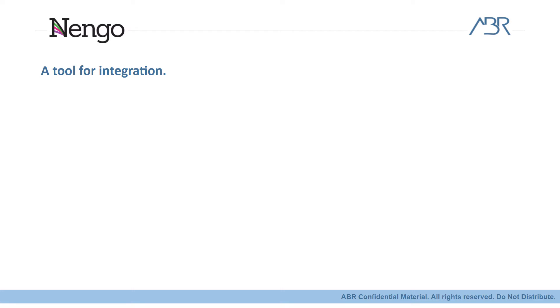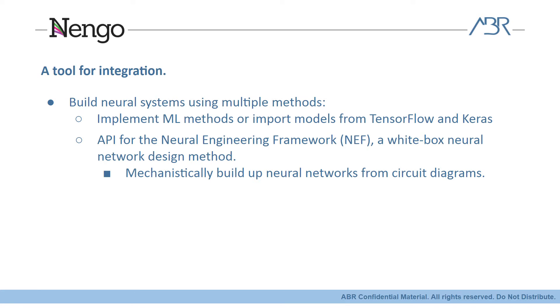Where Nengo really shines is as a tool for integration. When I'm in my neurorobotics development workflow, I need to be able to easily integrate a whole bunch of different kinds of things, like optimization methods, runtime dynamics, and backend hardware. On the perception side of my system, I want to be able to quickly build and train neural networks using deep learning, or import already built models from TensorFlow and Keras. On the control side of my system, I want to build up neural networks using the Neural Engineering Framework, or the NEF, which is a white-box approach that lets you mechanistically build up neural networks from circuit diagrams, and implement algorithms from control theory literature. And then, of course, I need these two different parts to communicate seamlessly.